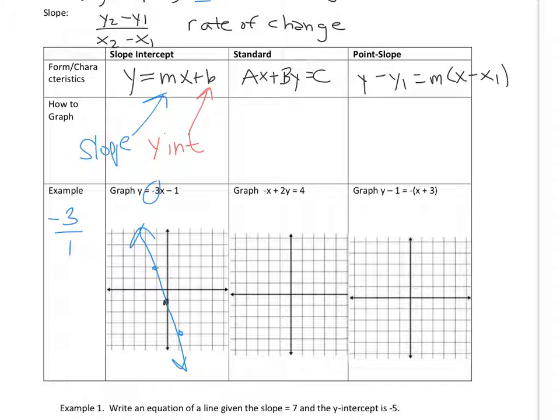For a standard form, to graph it, what you want to do is find the X-intercepts and the Y-intercepts. The A, and the B, and the C are not necessarily an X-intercept, or a Y-intercept, or a slope, as in over here. So to find the X-intercept down here, what you're going to do is set Y equal to 0. So if you set Y equals to 0, you're solving negative X equals 4,